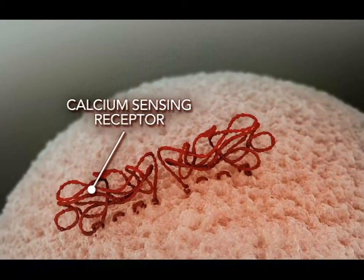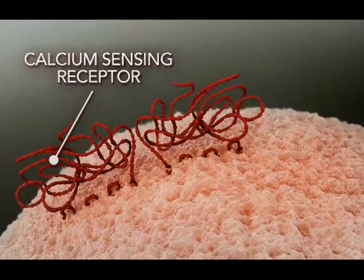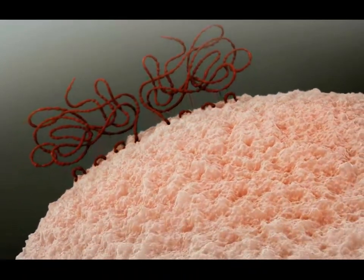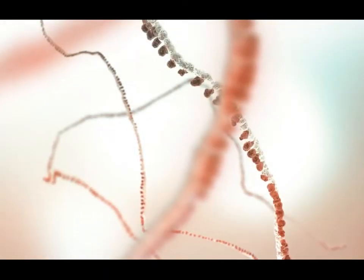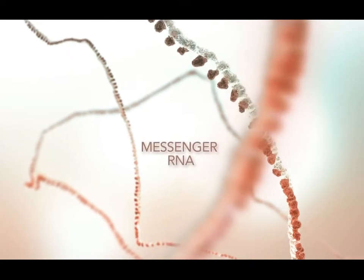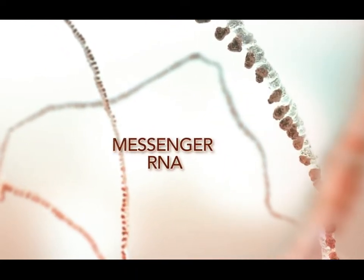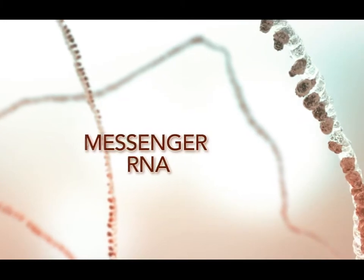The calcium-sensing receptor is the primary regulator of immediate response and need for PTH. It is also responsible for decreases in PTH messenger RNA and ultimately in parathyroid hyperplasia.